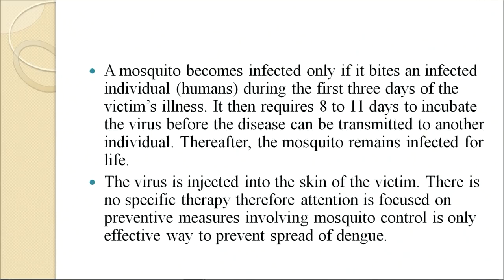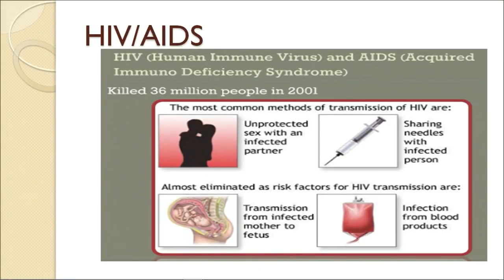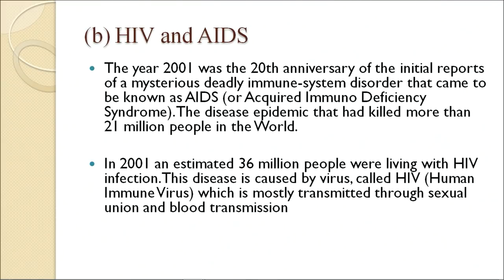The next disease is HIV or AIDS — Human Immunodeficiency Virus and Acquired Immunodeficiency Syndrome. The most common methods of transmission of HIV are unprotected sex with an infected partner, sharing needles with an infected person, blood transfusion, or transmission from an infected mother to fetus. The year 2001 was the 20th anniversary of the initial reports of this mysterious deadly immune system disorder known as AIDS. The epidemic had killed more than 21 million people worldwide, and an estimated 36 million people were living with HIV infection. This disease is caused by the virus HIV, which is mostly transmitted through sexual contact and blood transmission.